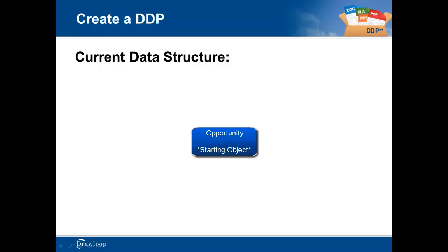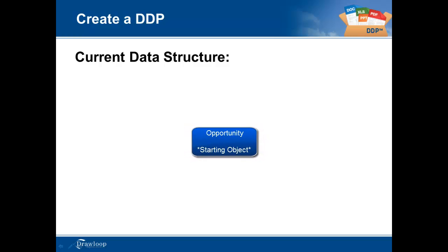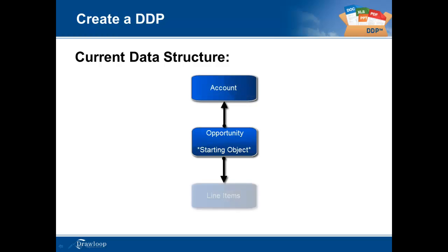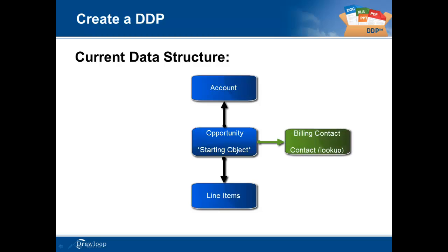The proposal DDP will merge information across multiple objects. These objects include the opportunity, which will also be the starting point of our DDP, in addition to the account, opportunity line items, a billing contact which is located within a lookup on the opportunity, and the competitor object which is a related list on the opportunity.